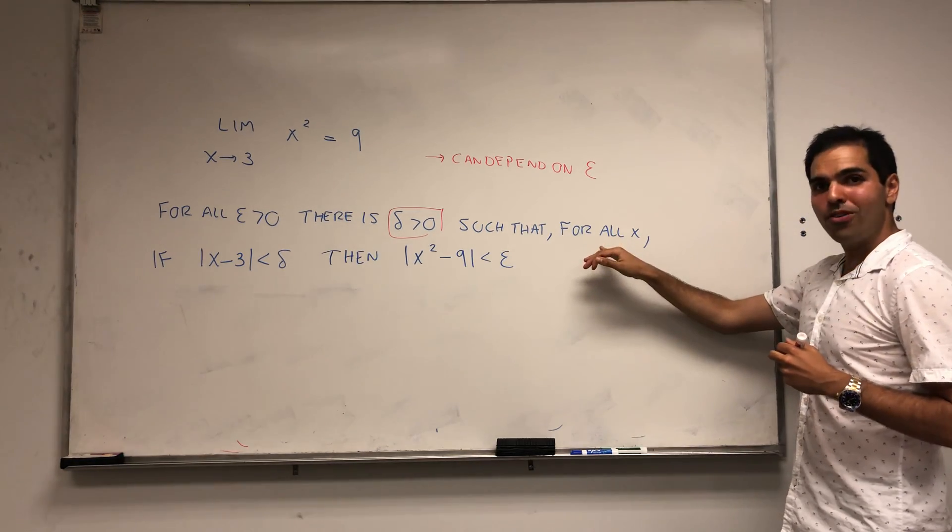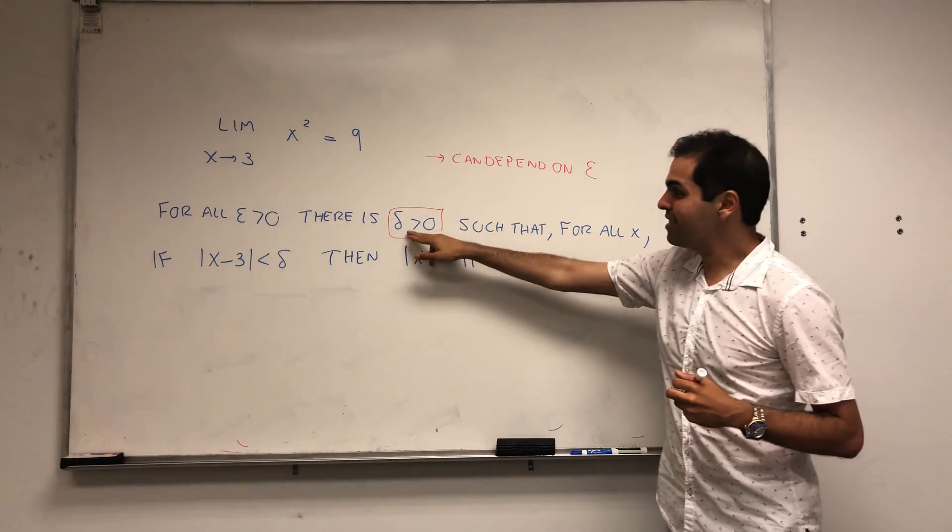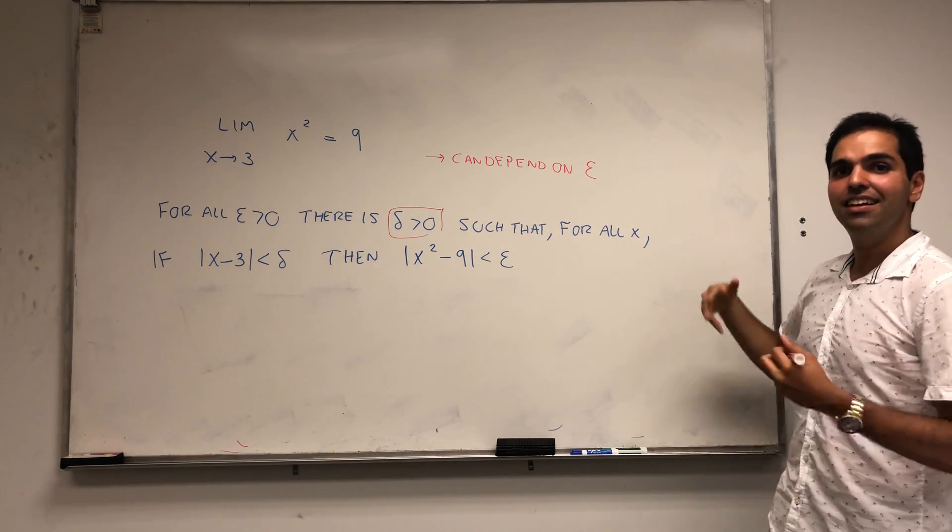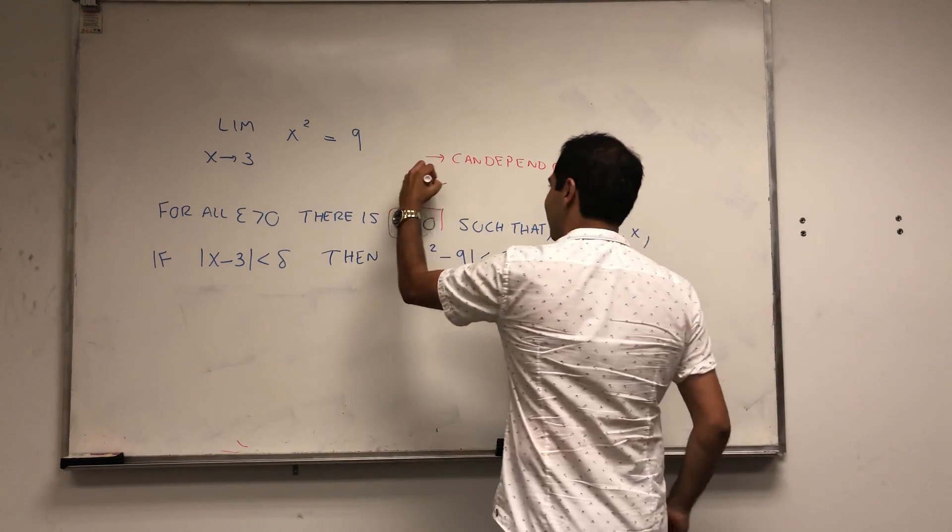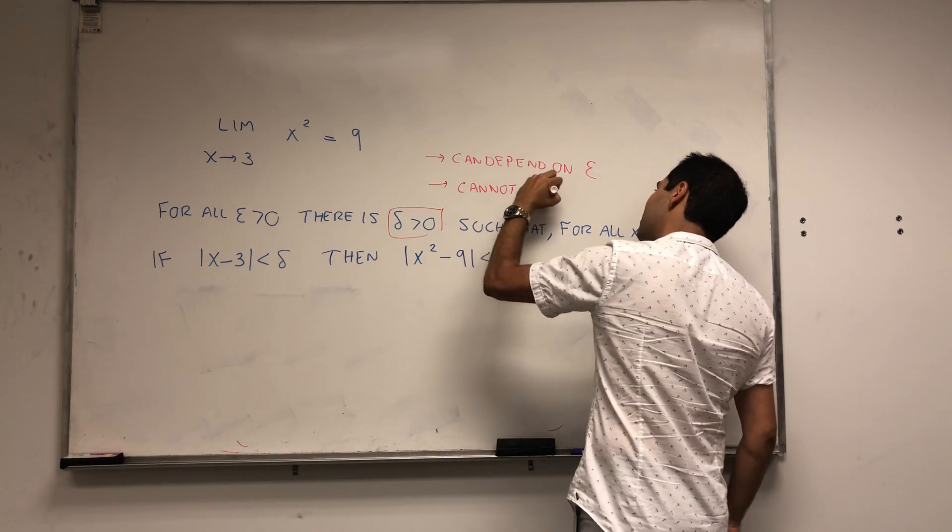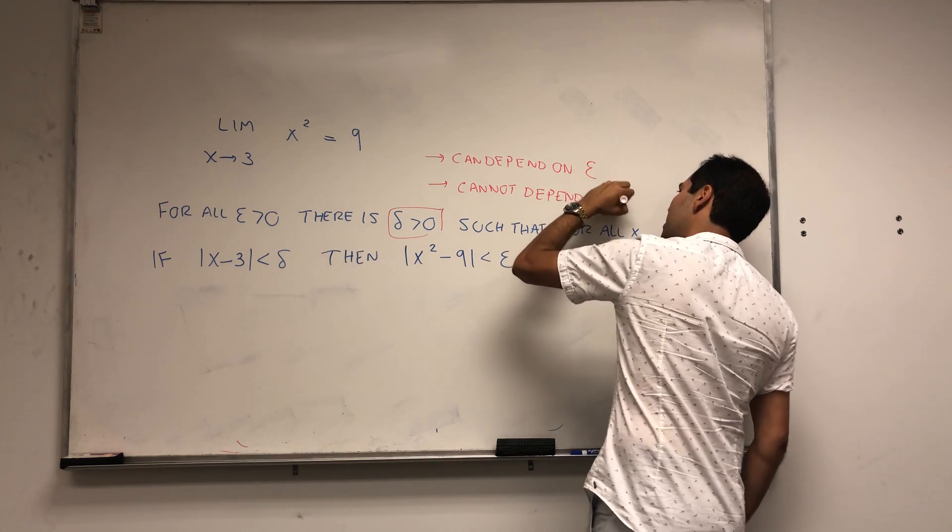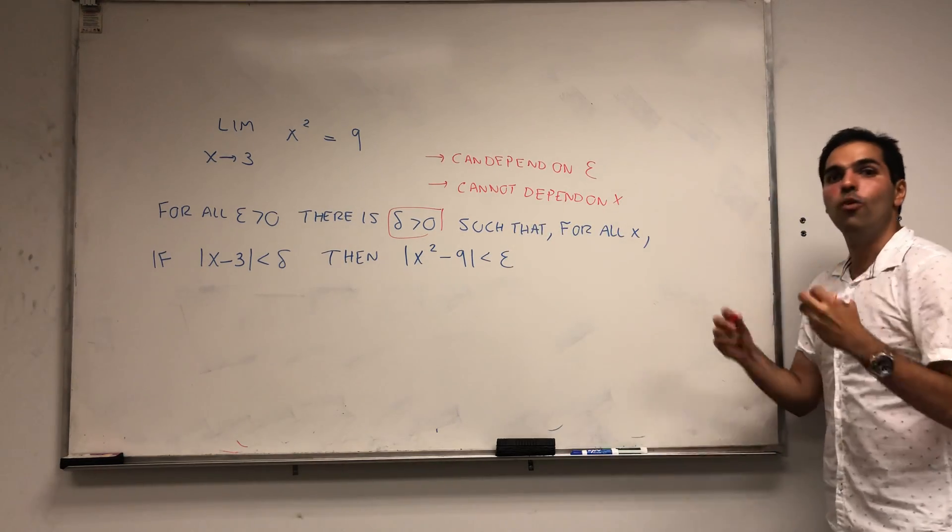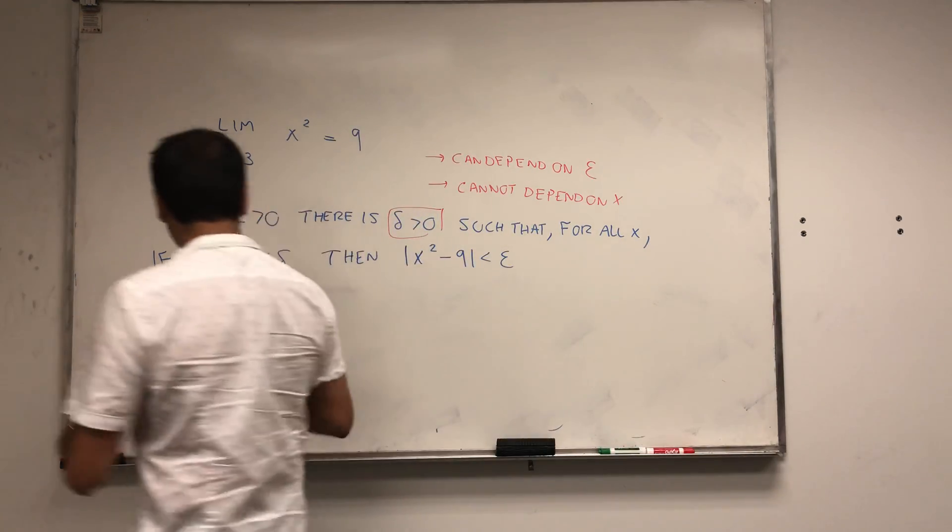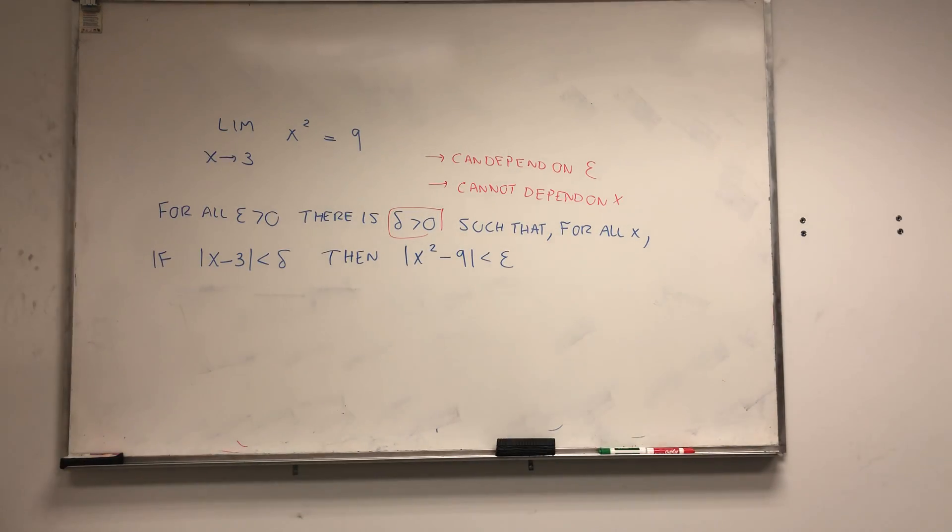But the very important thing is, because delta comes before that for all x, delta cannot depend on x. It has to be a delta that works for all x, like a universal constant.